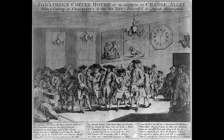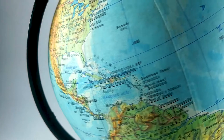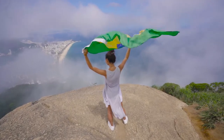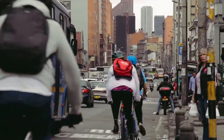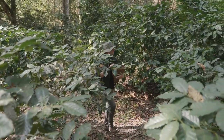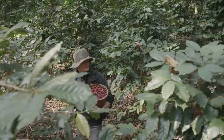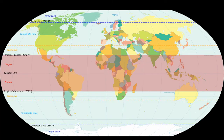By the 17th century, coffee had become a fashionable drink amongst the wealthy and was being served in coffee houses, which became important centres of social and political life. Today, coffee is grown in over 50 countries around the world, with the largest producers being Brazil, Vietnam and Colombia. The cultivation of coffee requires specific climatic conditions, and the beans are typically grown in regions located between the tropics of Cancer and Capricorn.